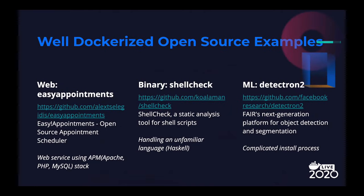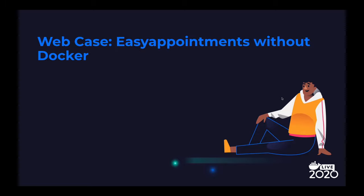Recall the three types — web, binary job, and machine learning — we categorized earlier. Let's go over each example. The first example is Easy Appointments, an example for a web server. The second example is ShellCheck, which is a shell script static analysis tool. The last example is Detectron2, Facebook's object detection and segmentation machine learning library.